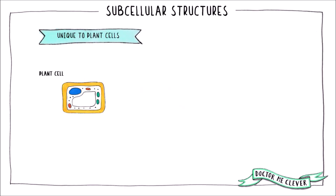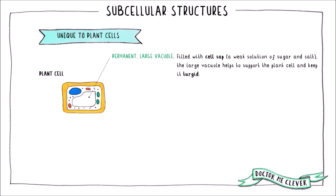There are three subcellular structures unique to plant cells that are not found in animal or bacterial cells. The first is the permanent large vacuole — a cell compartment filled with a weak solution of salt and sugars called sap. The large vacuole provides support to the plant cell, helping it to stay turgid.